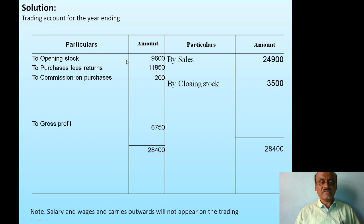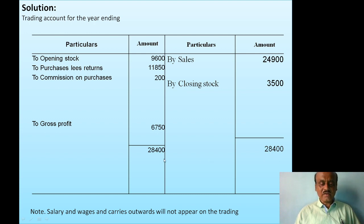For the homework trading account: opening stock 9,600; purchases less returns 11,850; commission on purchase 200 on the debit side; sales 24,900 on the credit side; closing stock 3,500 on the credit side. The credit side total is 28,400. The difference amount is 6,750, which is the gross profit. That is how the gross profit is to be calculated for this homework problem.